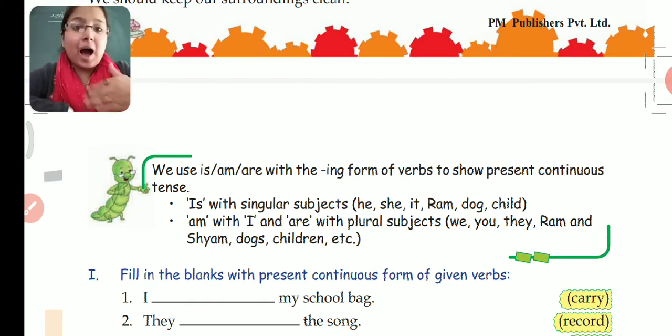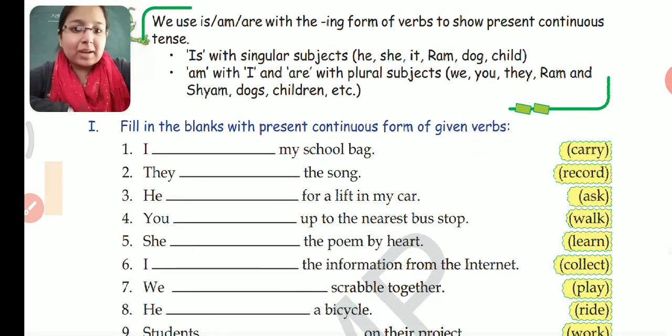For example: I am studying. Study is the verb. In order to make it present continuous, with I we use 'am', and study becomes studying. You are writing. She is dancing. She is singular, so with singular we use 'is', so she is dancing. Similarly, we can frame sentences using present continuous tense.